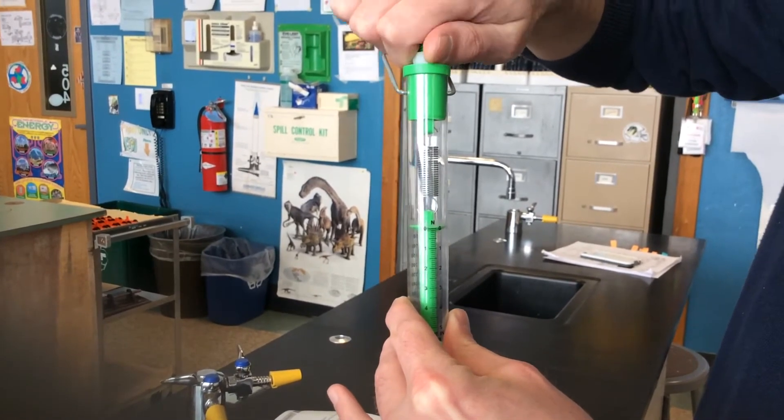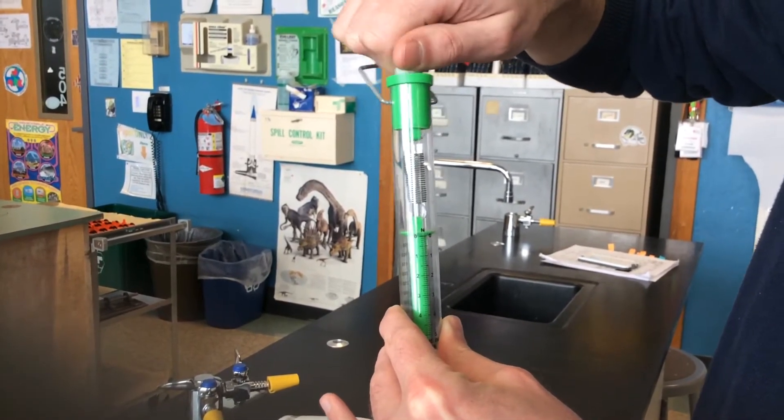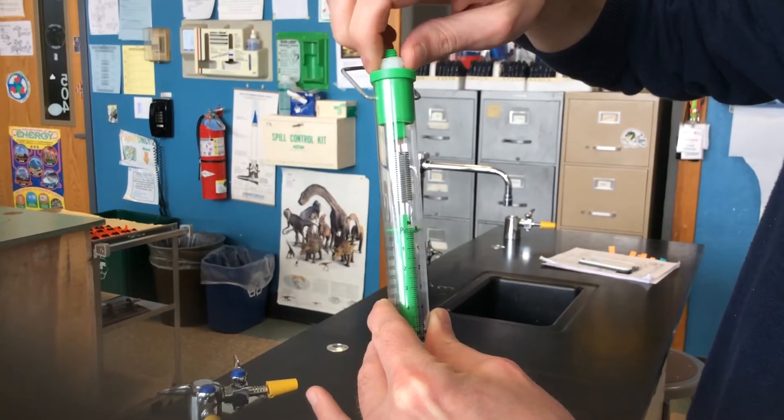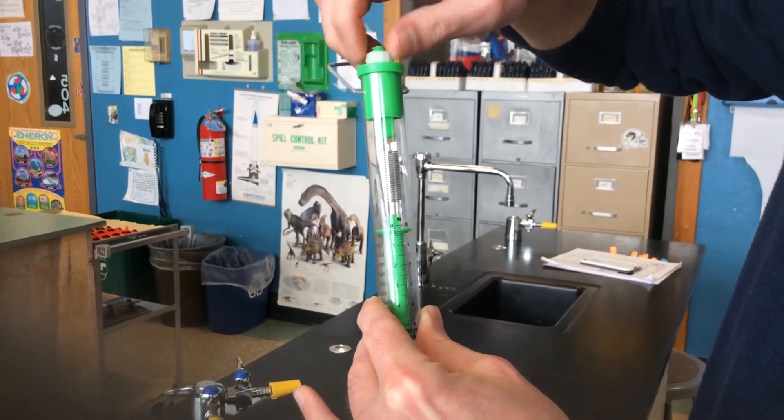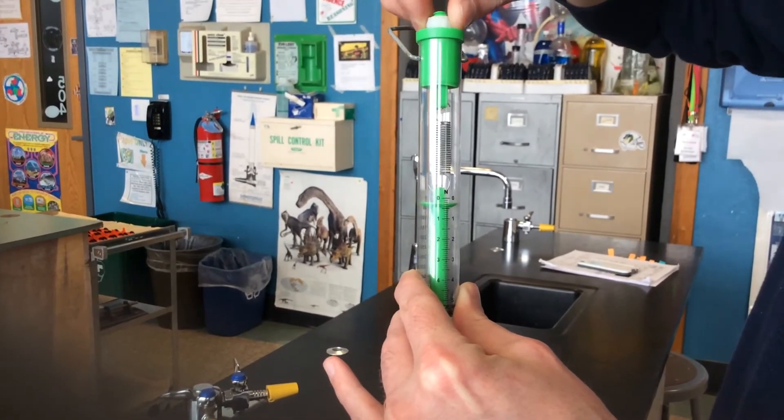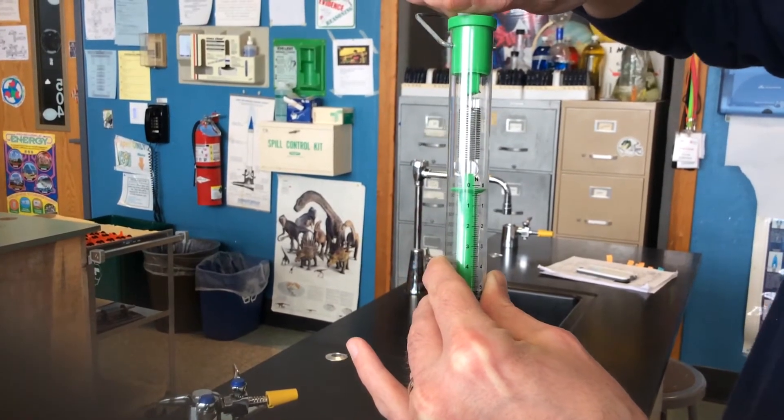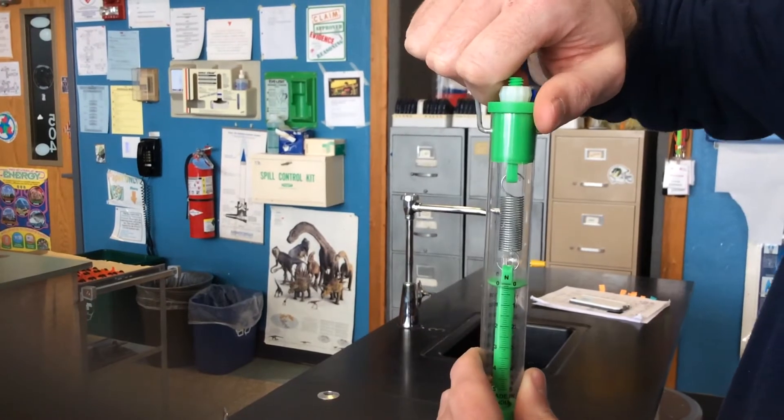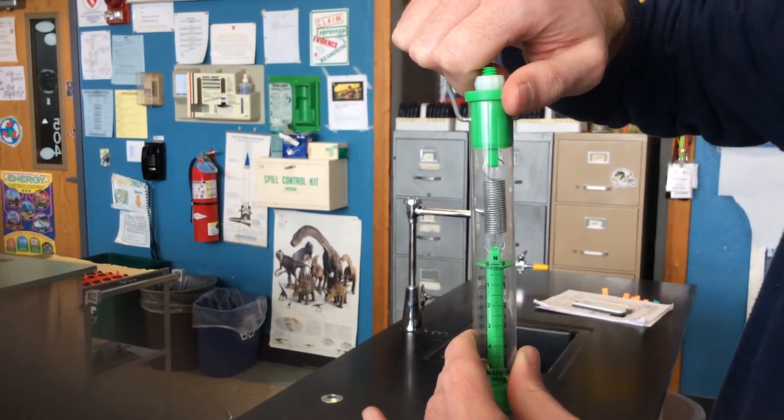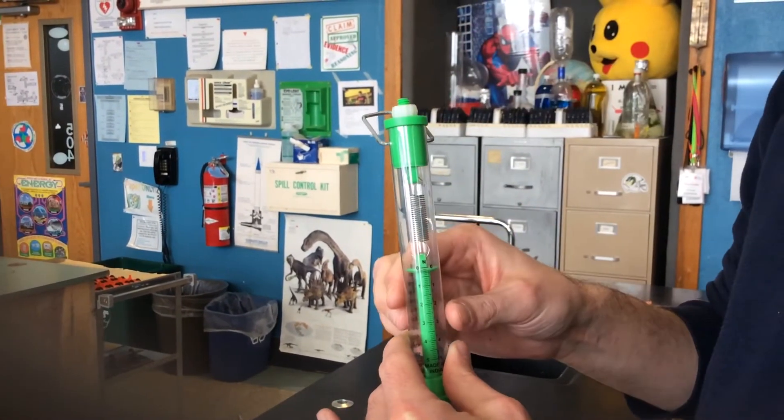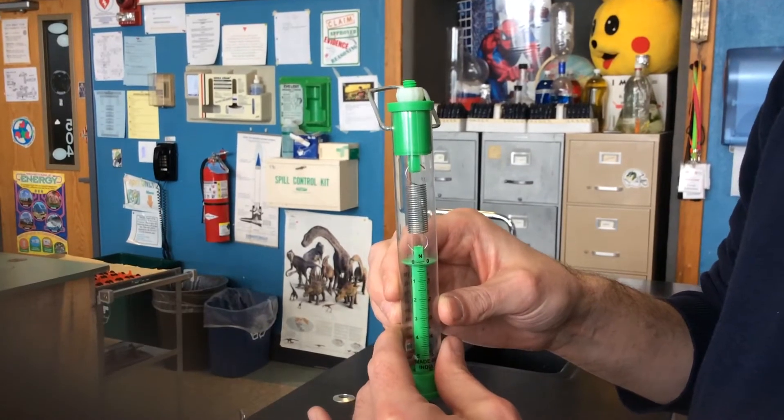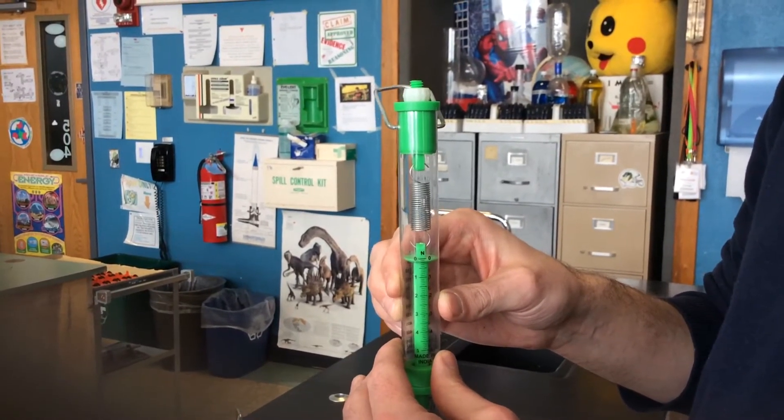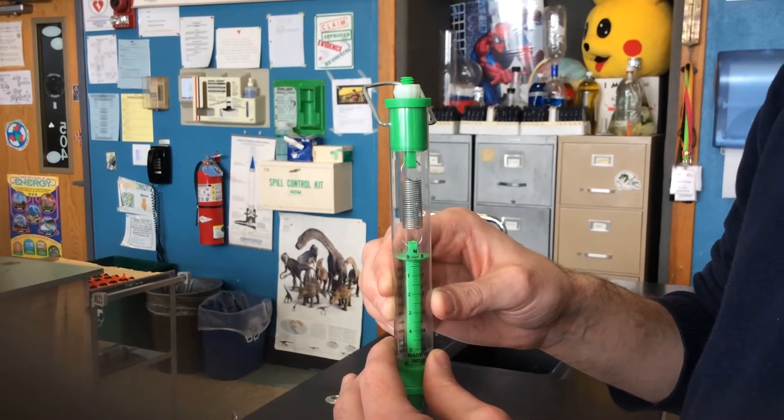And you can see if I turn it one way, it moves it one way. And if I turn it the other way, it moves the other way. So, what I'm going to do now is line that up exactly with the 0 right there. And you always want to do this at the beginning of your labs because it's very easy for these to get out of calibration from one group to another, one day to another. So, you always want to check your equipment.